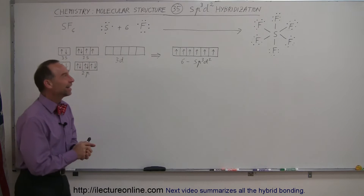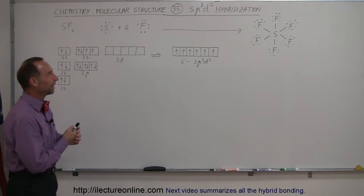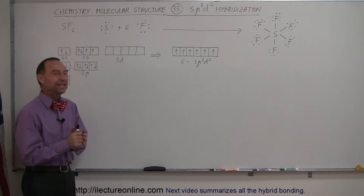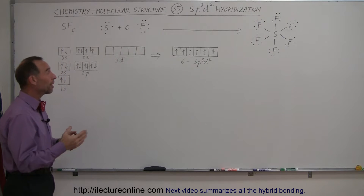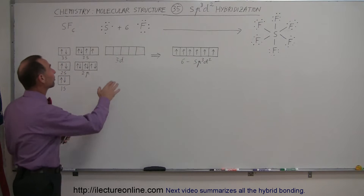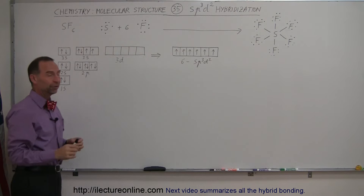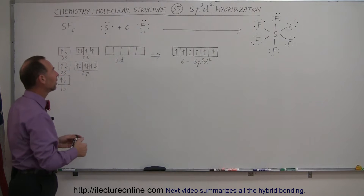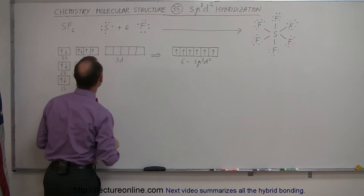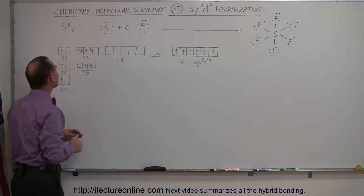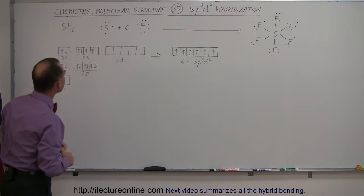Welcome to ElectronLine. Here's our next hybridization orbital: sp3d2. This comes into play for molecules that have six valence electrons, such as sulfur, wanting to make six bonds with fluorine atoms — making sulfur hexafluoride.